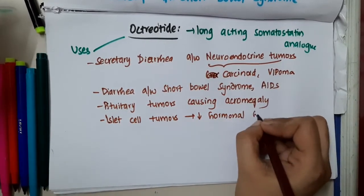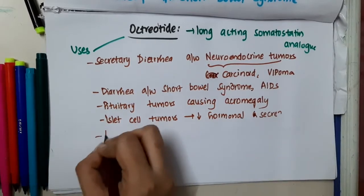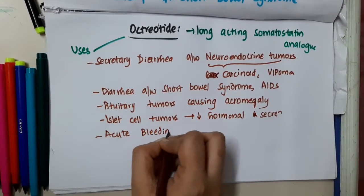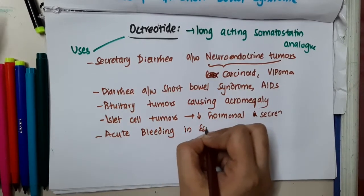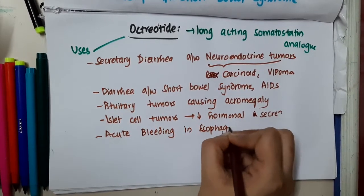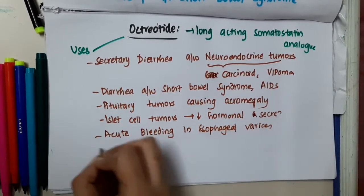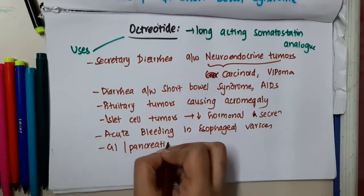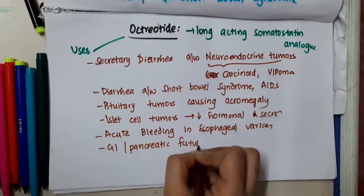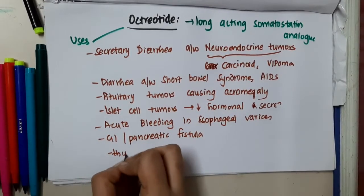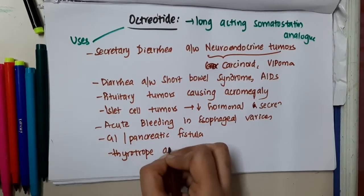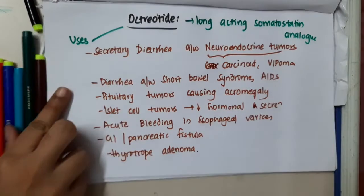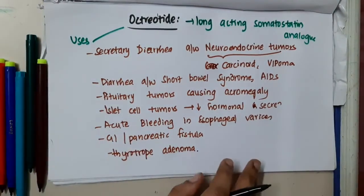Octreotide is also used in acute bleeding in esophageal varices, in GI or pancreatic fistula, and in thyrotrope adenoma. These are the different uses of octreotide. Thank you for watching.